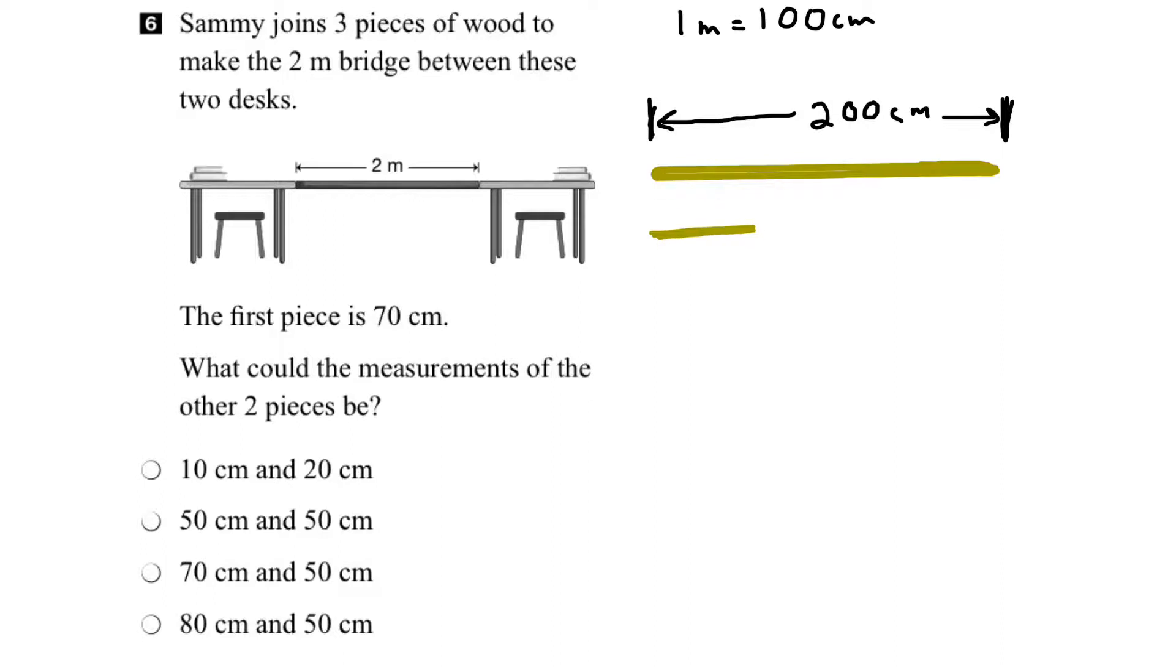So let's move it over just underneath the bridge there. So we know from here to here is 70 centimeters. So from here to here, which is made up of the other two pieces of wood, this must be 200 minus 70 centimeters.